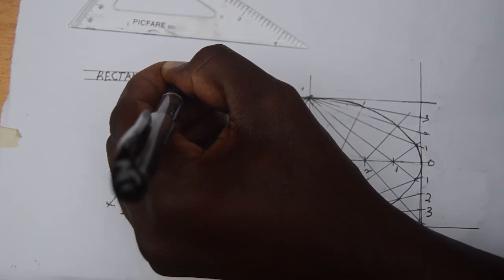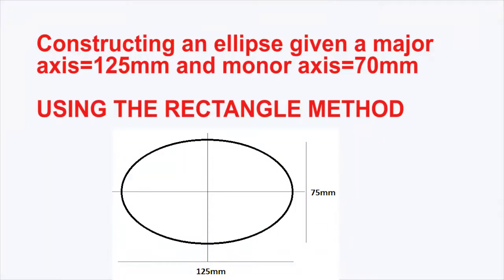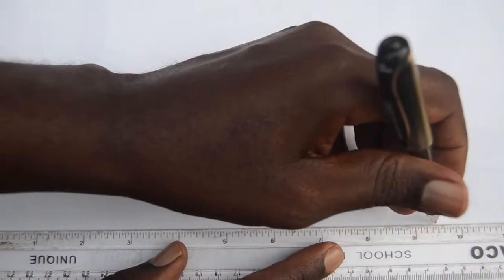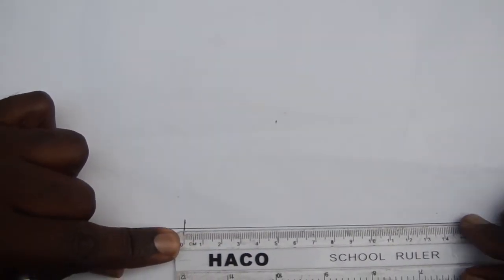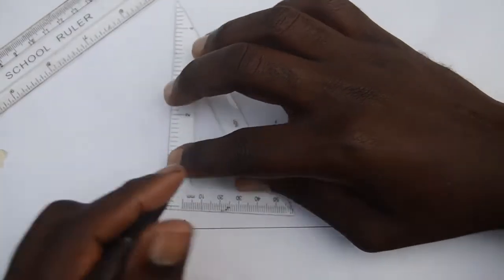We are constructing an ellipse given the major and minor axis using the rectangle method. You draw a rectangle with its length equal to the major axis, which in this case is 125 millimeters, and its width equal to the minor axis, which in this case is 70 millimeters.